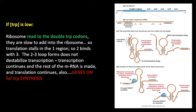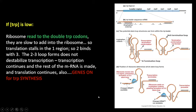When tryptophan concentration is low, the ribosome reaches the double tryptophan codon but is slow to add amino acids, so translation stalls in the first region. With the ribosome stalling in region 1, regions 2 and 3 are allowed to form intramolecular base pairs. This loop does not destabilize transcription and hence transcription continues to form the mRNA; translation will also be continued, and the genes will be on for tryptophan synthesis.